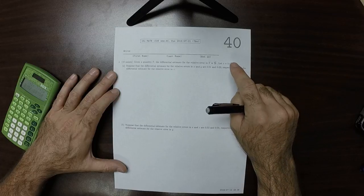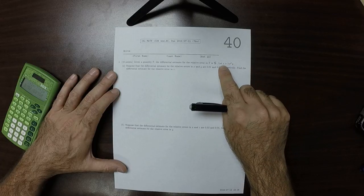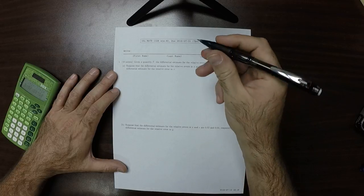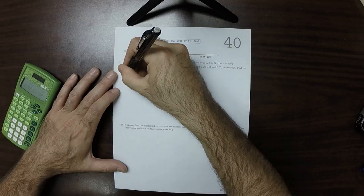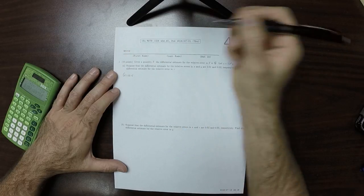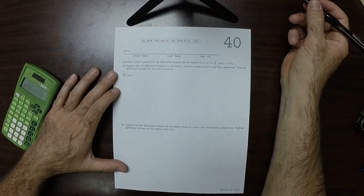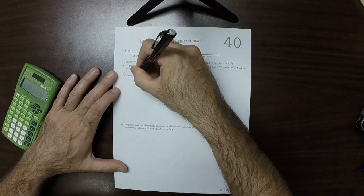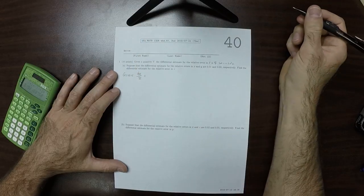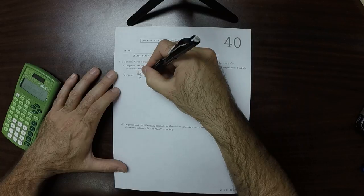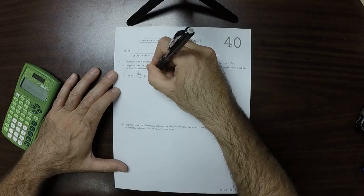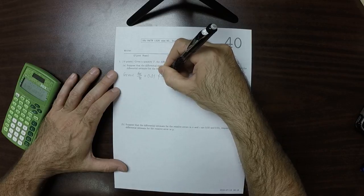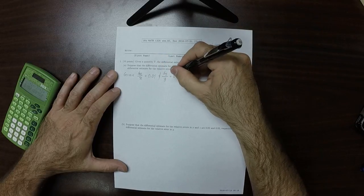So then here is z in terms of x and y. So what we are given is that the differential estimate for the relative errors of x and y are these numbers. So what we're given is dx over x is 0.01 and dy over y is 0.03.